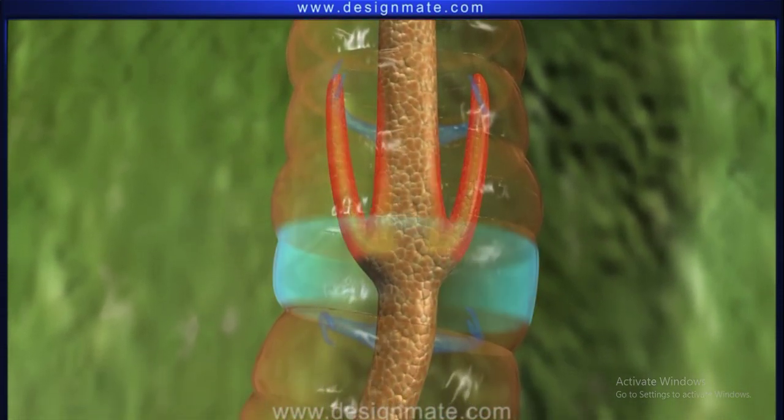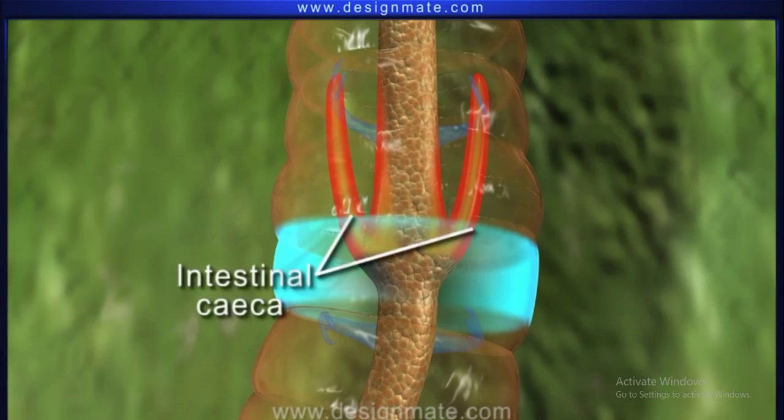A pair of short conical intestinal ceca project from the intestine on the 26th segment.